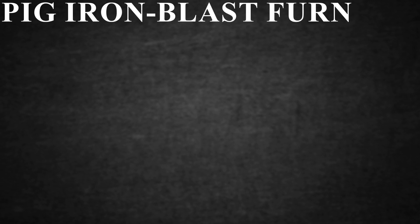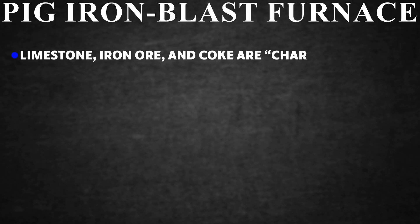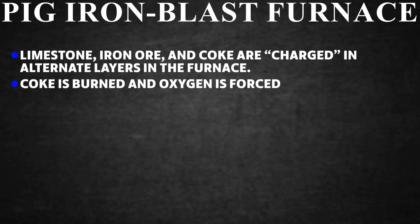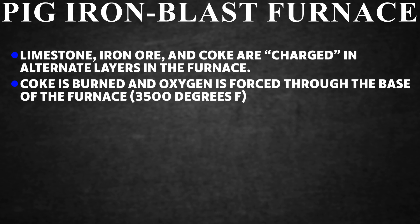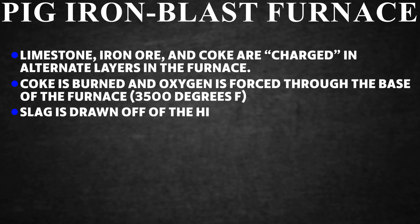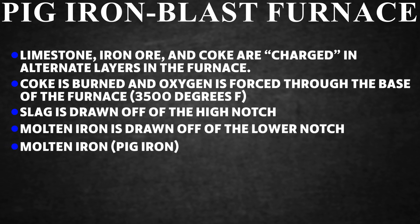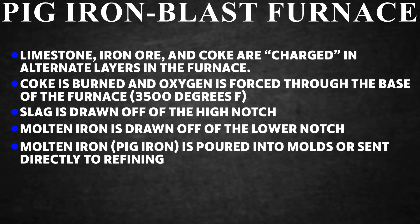Pig Iron — Blast Furnace. Limestone, iron ore, and coke are charged in alternate layers in the furnace. Coke is burned and oxygen is forced through the base of the furnace at approximately 3,500°F. Slag is drawn off at the high notch, and molten iron is drawn off at the lower notch. The molten pig iron is then poured into molds or sent directly to refining.